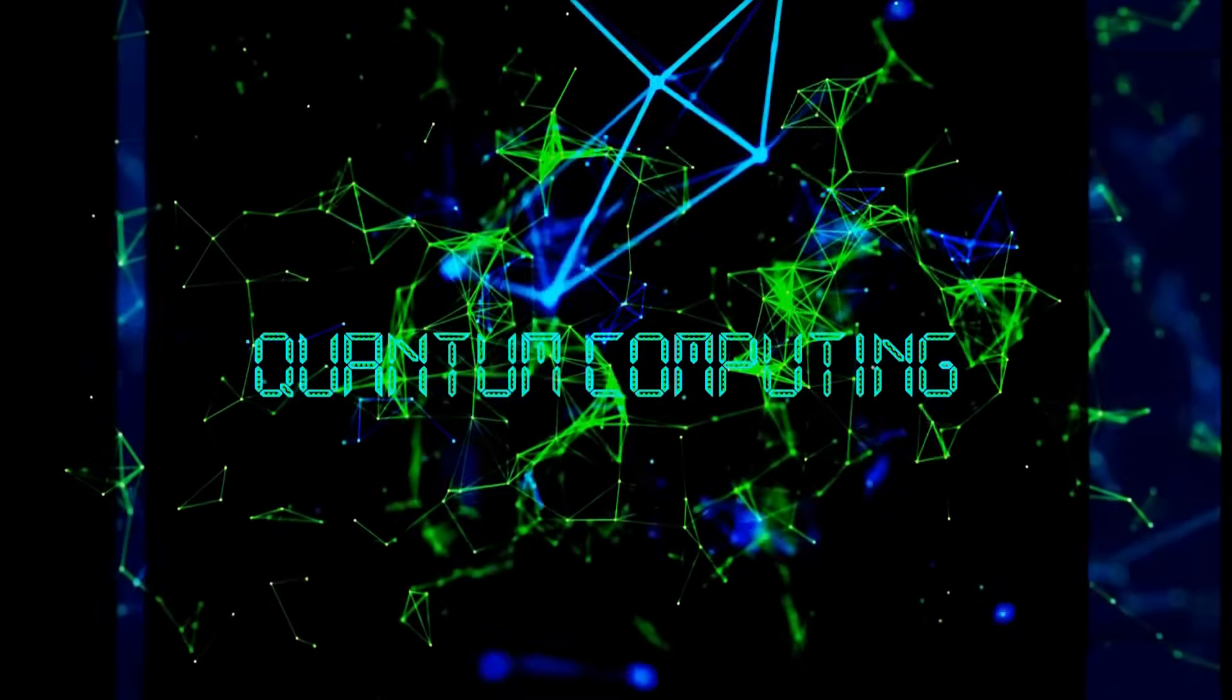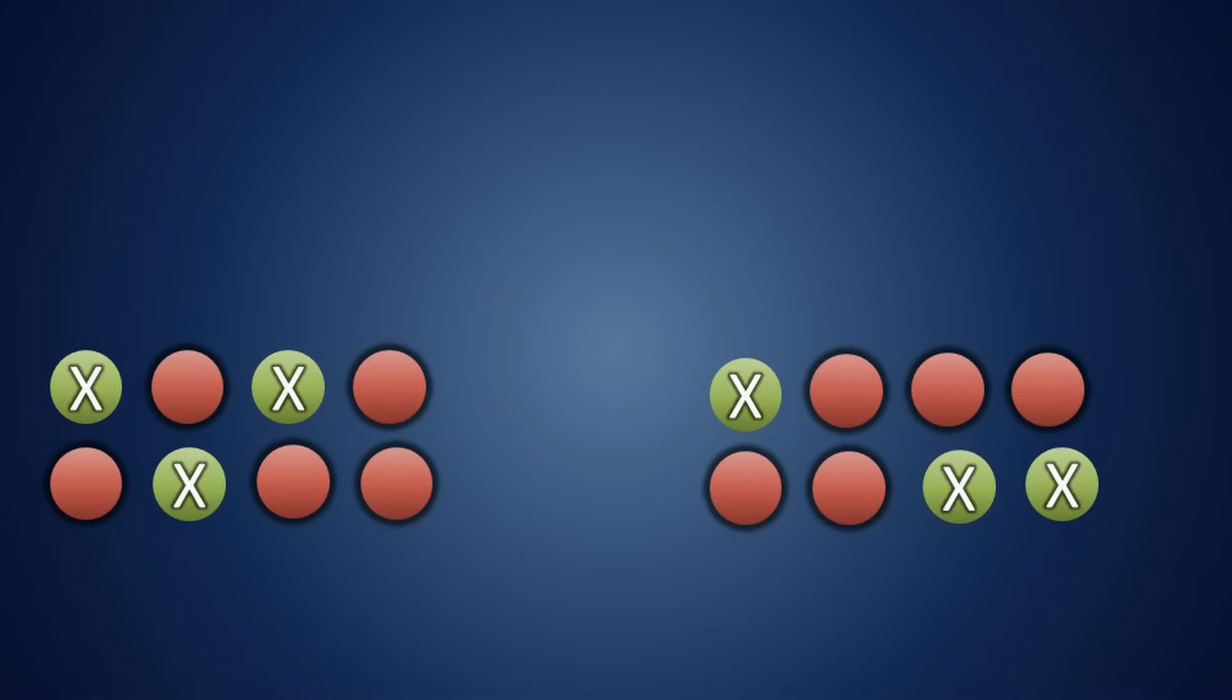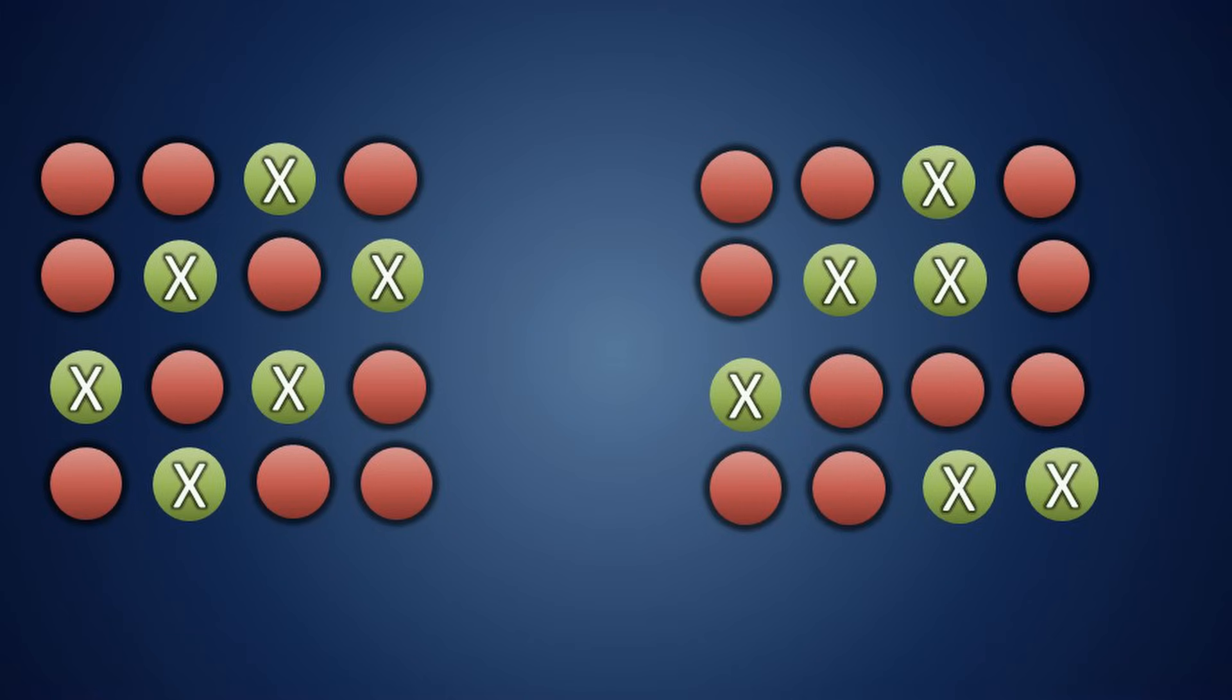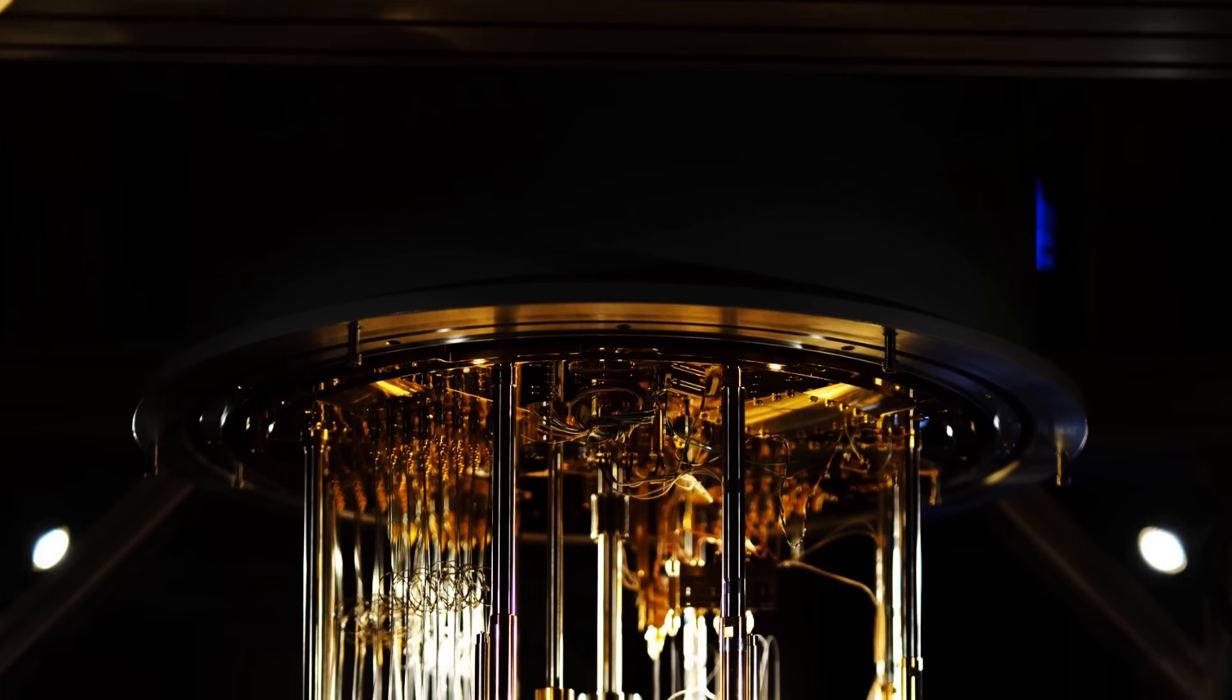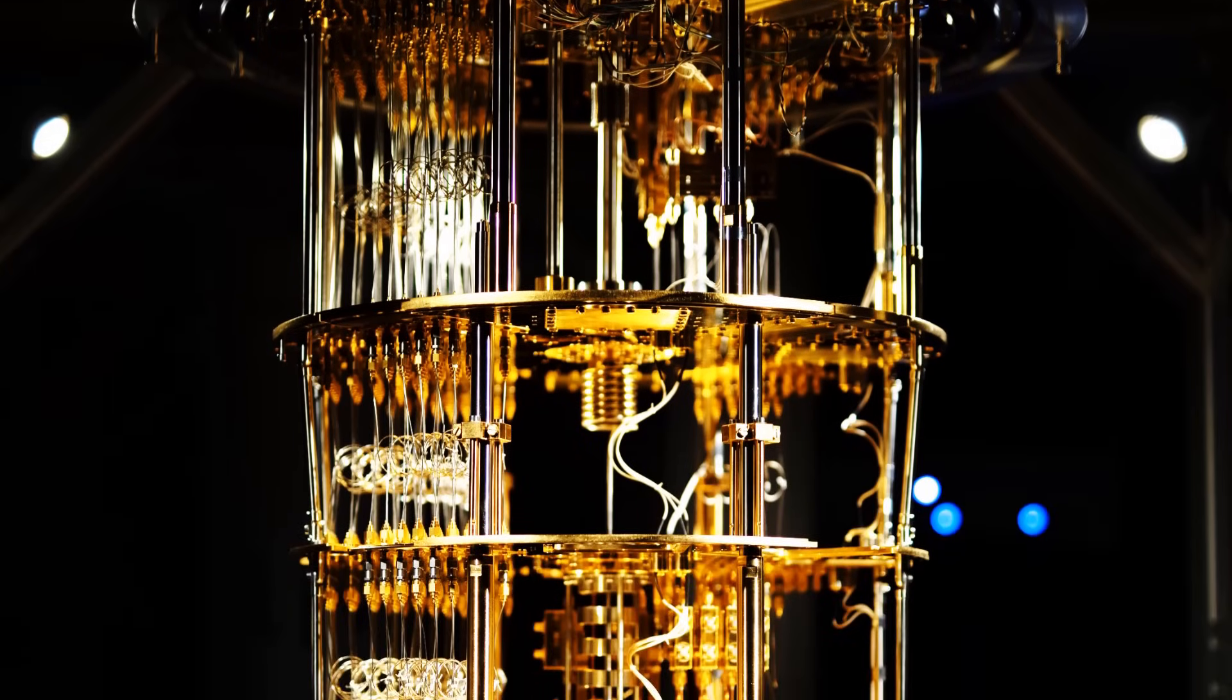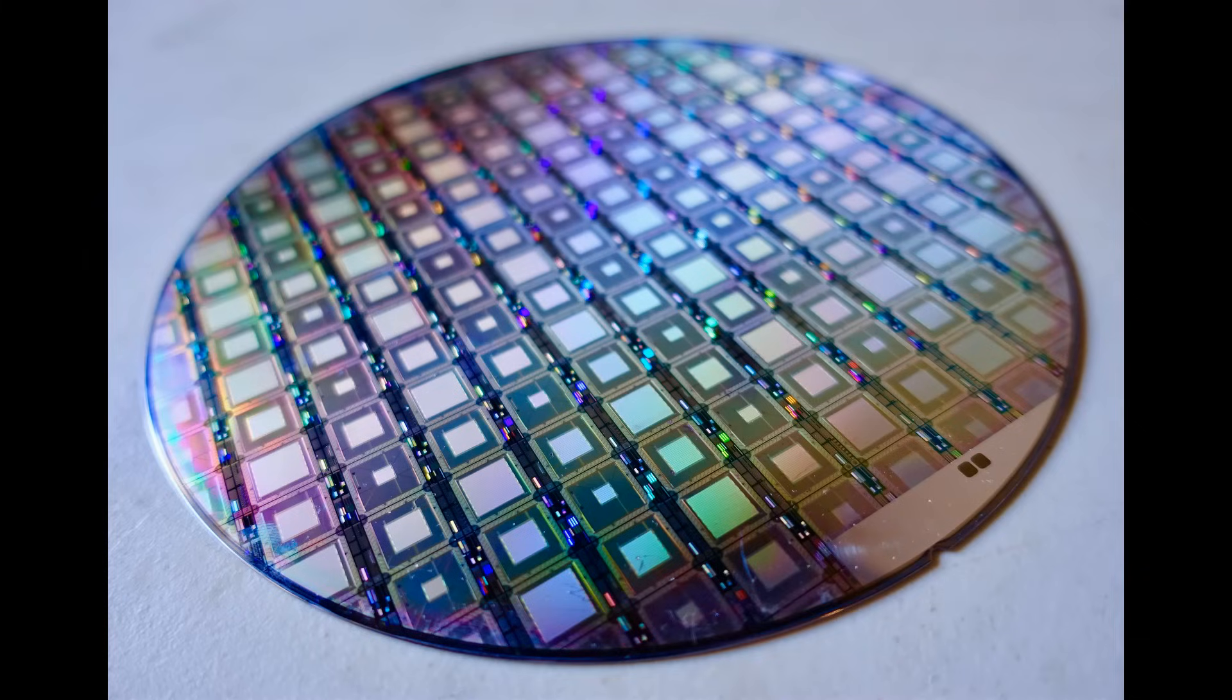However, this approach comes with a significant challenge. Every physical qubit has a chance of introducing errors. So, while increasing the number of physical qubits helps with error correction, it also creates more opportunities for errors to occur. This means that simply adding more physical qubits does not guarantee improved error correction. In fact, for many years, the rate of new errors introduced by additional qubits was higher than the rate at which errors could be corrected. This made scaling up quantum computers nearly impossible. This limitation was a major obstacle to the development of quantum computing. Even with larger quantum chips, the increasing error rates negated any benefits.